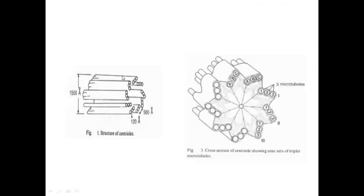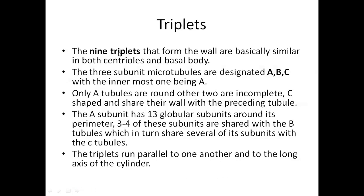When you view a centriole horizontally it looks cylindrical, and in the sectional view we can see three microtubular triplets which are named A, B, and C. A is facing toward the center, and A is linked to C. The nine triplets that form the wall are basically similar in centrioles and basal body — remember centriolar structures that form cilia and flagella are considered as the basal body.